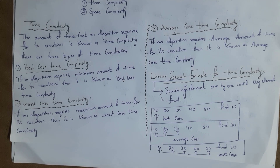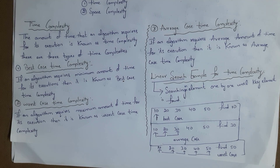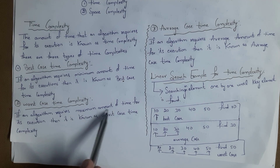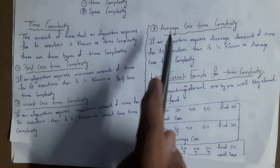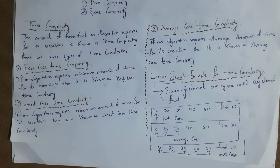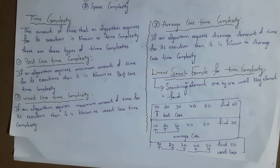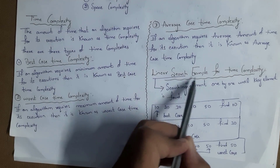If an algorithm gets executed in a short period of time, then it is known as best case time complexity. If an algorithm requires a maximum amount of time for its execution, then it is known as worst case time complexity. If an algorithm requires an average amount of time for its execution, then it is known as average case time complexity. I will explain these with a linear search example.